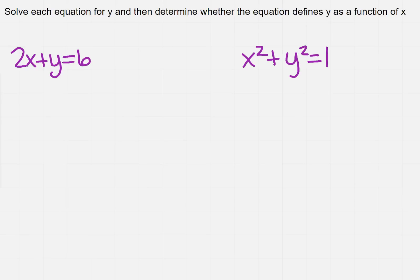So let's go ahead and try this, and then we can interpret what that means. If I want to get y all by itself, I need to subtract 2x from both sides. And I'm going to get y equals negative 2x plus 6.